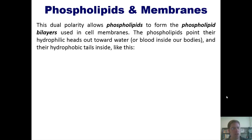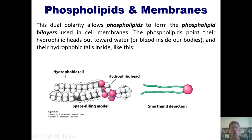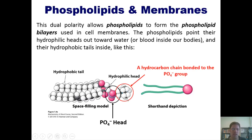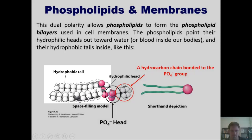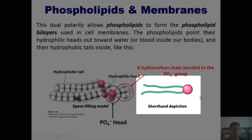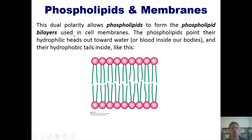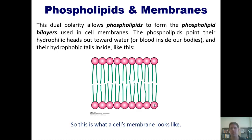When that occurs, the phospholipids point their hydrophilic heads out toward the water — the blood inside our bodies or the cytosol inside cells — and they point their hydrophobic tails inward. You can see the phosphate head, a hydrocarbon group bonded to the phosphate head, and the hydrophobic tails. This is a shorthand way of drawing a phospholipid. When you take these phospholipids and throw them into an aqueous environment, they all line up with hydrophilic heads outward and hydrophobic tails inward. Done in a spherical fashion, that forms a phospholipid membrane in cells.